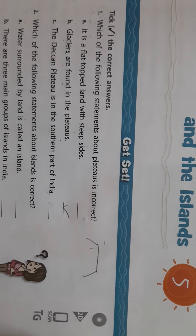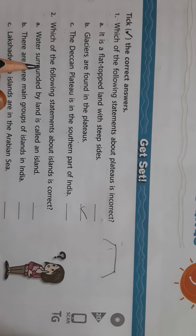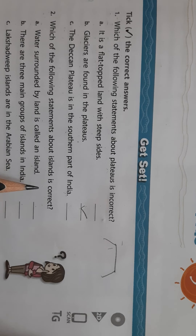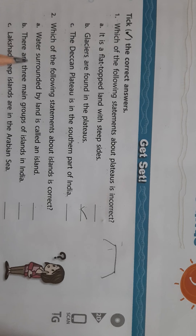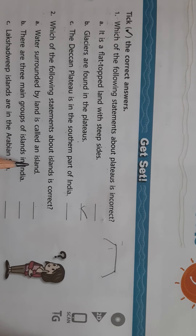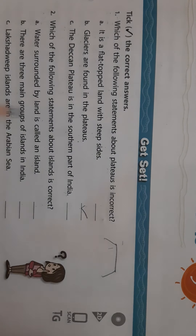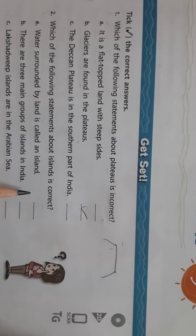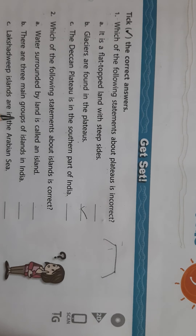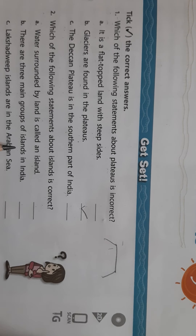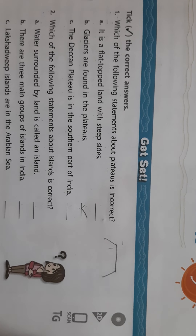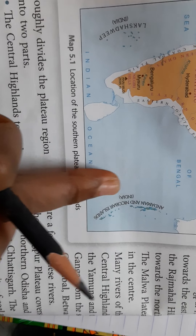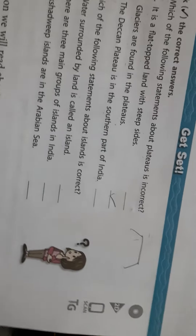Now come to the second question: which of the following statements about islands is correct? 'Water surrounded by land is called an island' — no, this is wrong. 'There are three main groups of islands in India' — is this correct? No, there are only two groups of islands. We have studied in the map also that there are two groups of islands: the Andaman and Nicobar Islands and Lakshadweep Island.